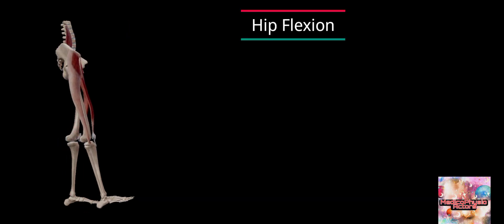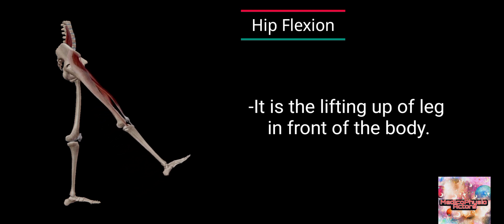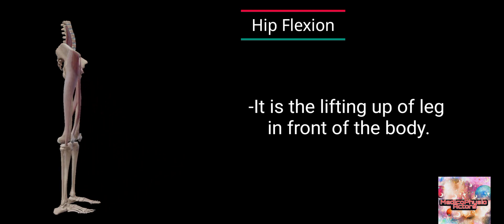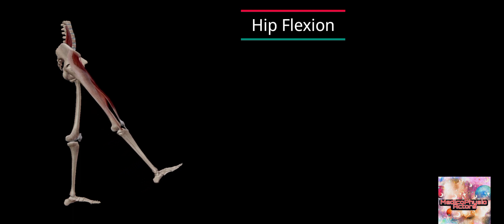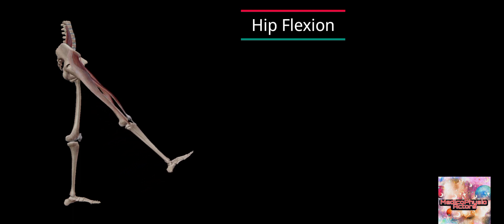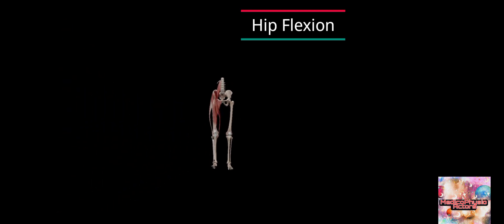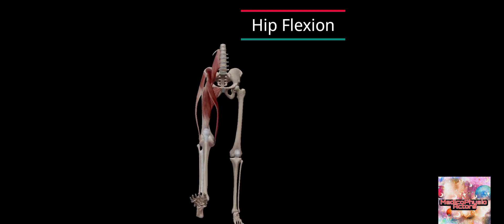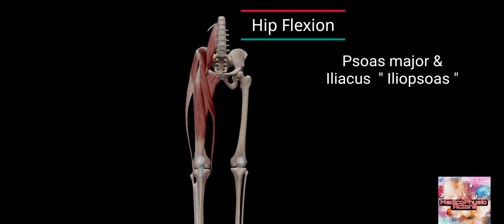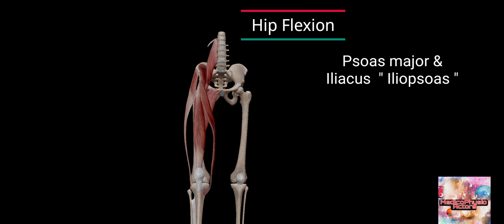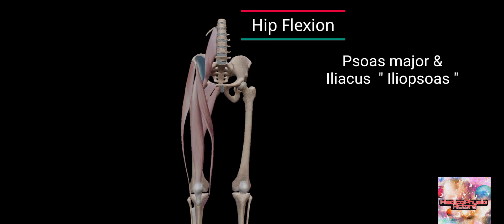Hip flexion. It is the lifting up of the leg in front of the body. The muscles acting are psoas major and iliacus, which are the main hip flexors, known as iliopsoas.